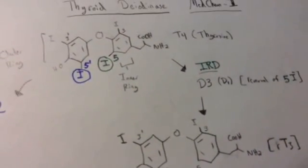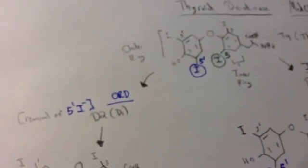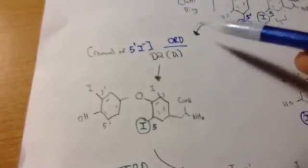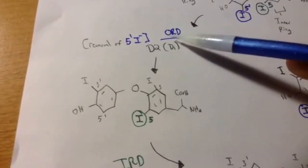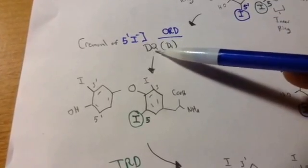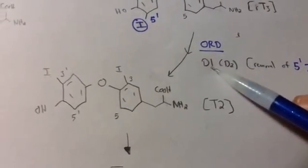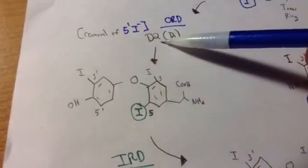So that was the first method of the deiodinase. The second one is if we attack the outer ring first. So if we attack the outer ring first here, we have outer ring deiodinase first. And we actually use D2. Now over here, if you remember, we used D1 primarily, D2 to a lesser extent. So something special about this one is we use D2 primarily.